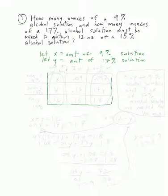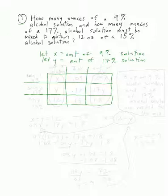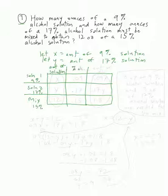Let's go ahead and build our table. We have the 9% solution, the 17% solution, and the mix. The columns are amount of solution, percent alcohol, and amount of alcohol. Let's fill in the percents first: 0.09, 0.17, and 0.15. For the amount of solution, x goes in the first row, y in the second, and 12 ounces in the mix row.